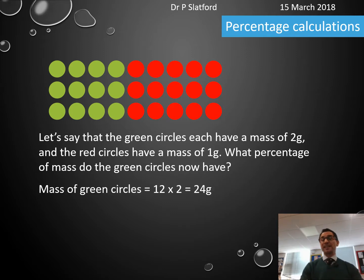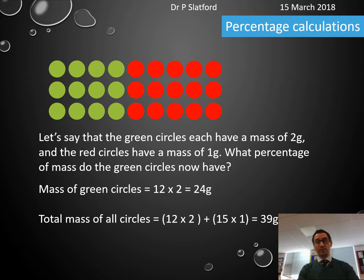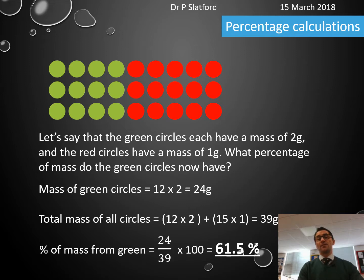We've got 12 green circles each of 2 grams, so that makes 24 grams. The total mass is 12 times 2 for the green circles plus 15 times 1 for the red, so 39 grams total. The percentage of mass from green circles is 24 out of 39, so 24 divided by 39 times 100 equals 61.5%.